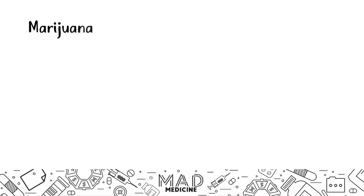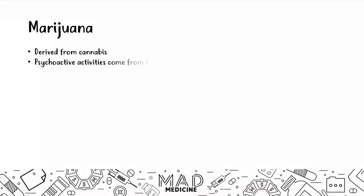The next thing to discuss is marijuana — also known as grass, green, ganja, cannabis, etc. It's derived from the cannabis plant. A lot of people confuse marijuana and hemp: both come from the cannabis plant, but hemp is the fibrous remains, while marijuana comes from the bud or flower. Marijuana has psychoactive activity due to one substance: tetrahydrocannabinol, THC — the psychoactive component, and that's what you need to know for Step 1.